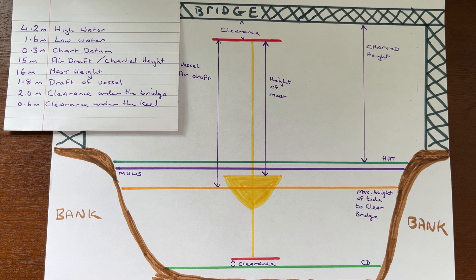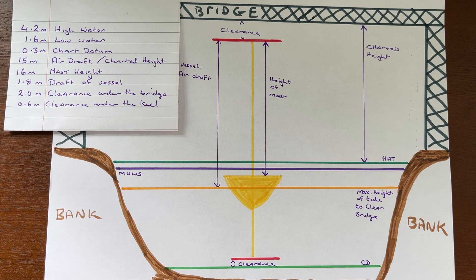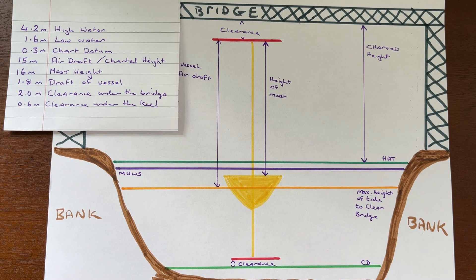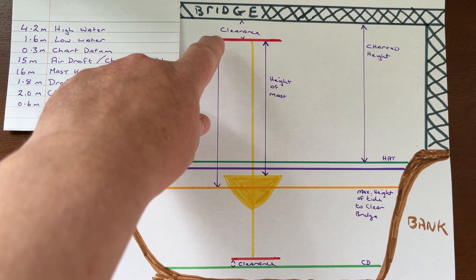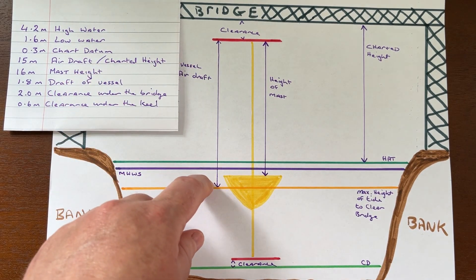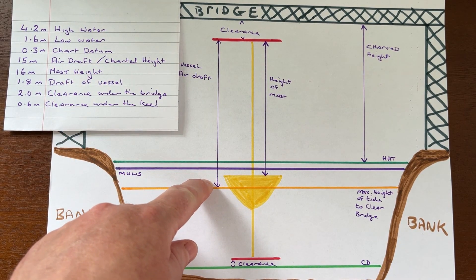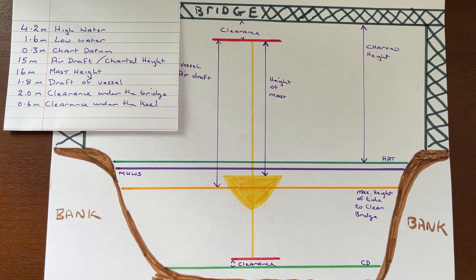We calculate our draft from the waterline to the bottom of the keel. Most boats are between 1.6 and 2.5 meters, but Wave Dancer is 1.8 meters so we will use that as our example. From the top of the mast to the waterline is our vessel air draft. You will find your vessel air draft in your paperwork regarding your boat.